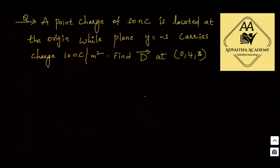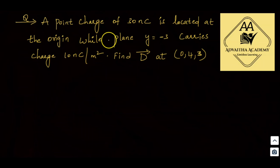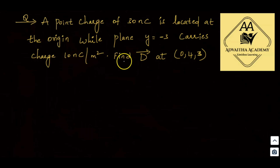Hello everyone, welcome back to Admit Academy. In this video, we will solve a problem on electric flux density. The problem: a point charge of 13 nanocoulombs is located at the origin, while the plane y = -3 carries a charge of 10 nanocoulombs per meter square. Find D̄ at (0, 4, 3).